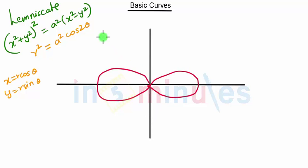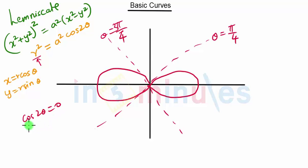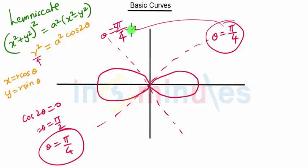The lemniscate looks like a figure-eight, and we also have lines here — this line will be π/4 and this line will be 3π/4. To see how we got this: in the polar equation, when we put r = 0, we get cos 2θ = 0. When the cosine of an angle is 0, the angle is π/2, so we get θ = π/4. Similarly we get θ = 3π/4.